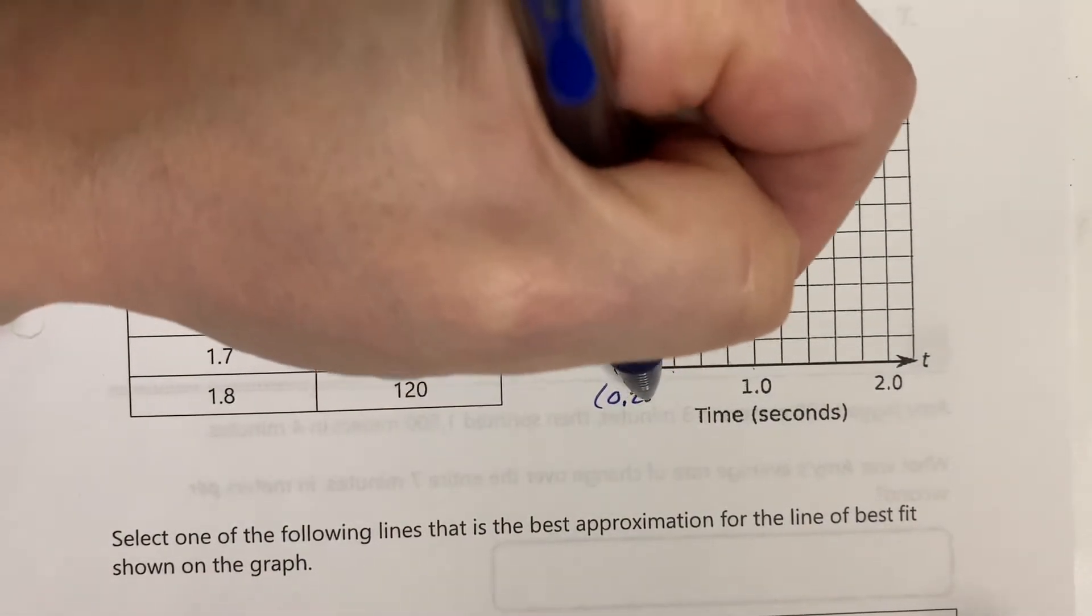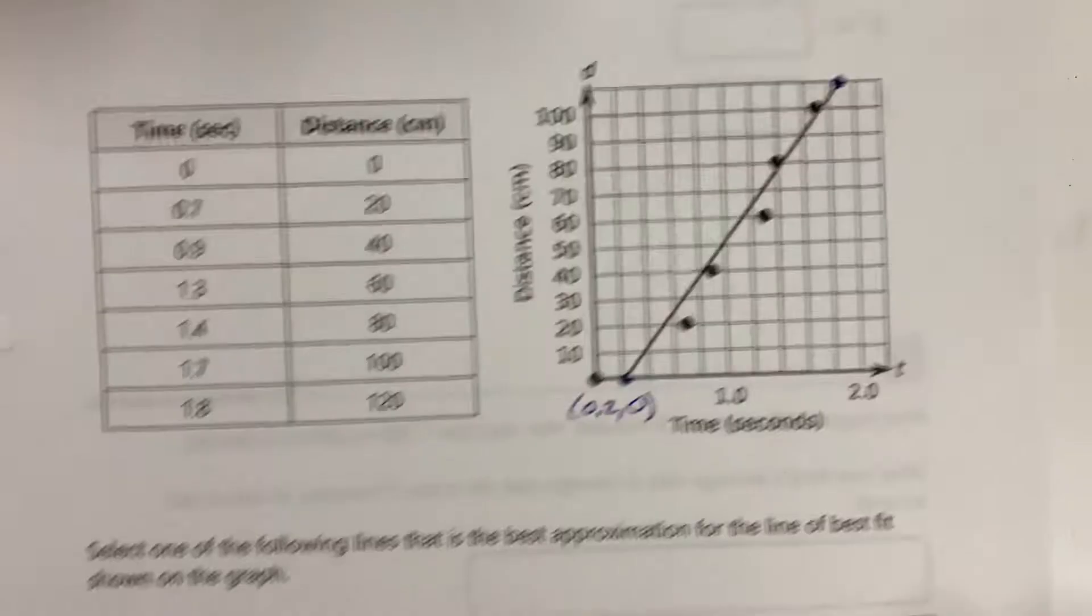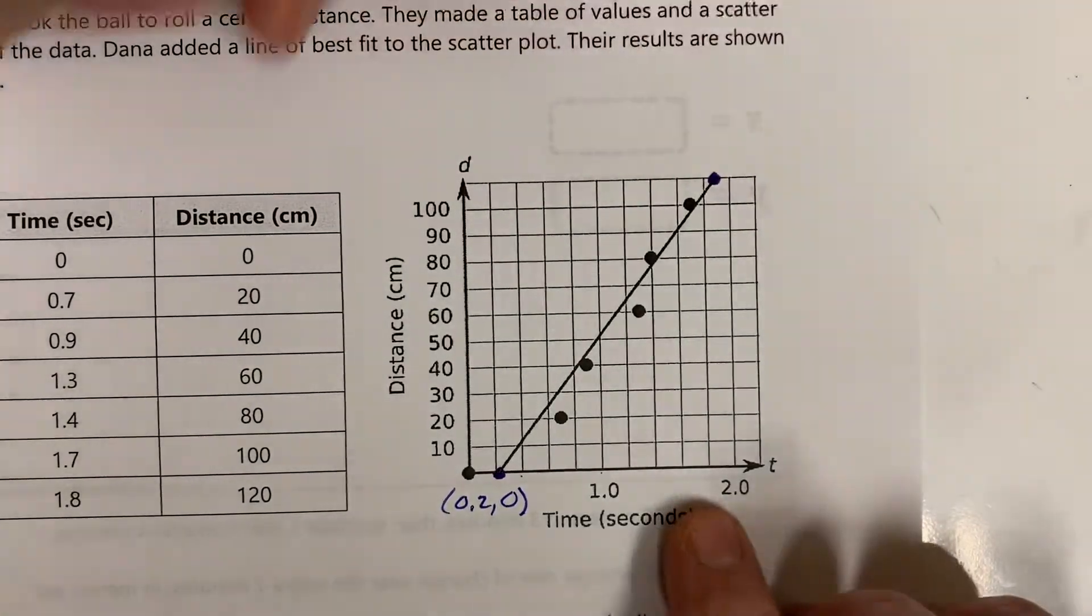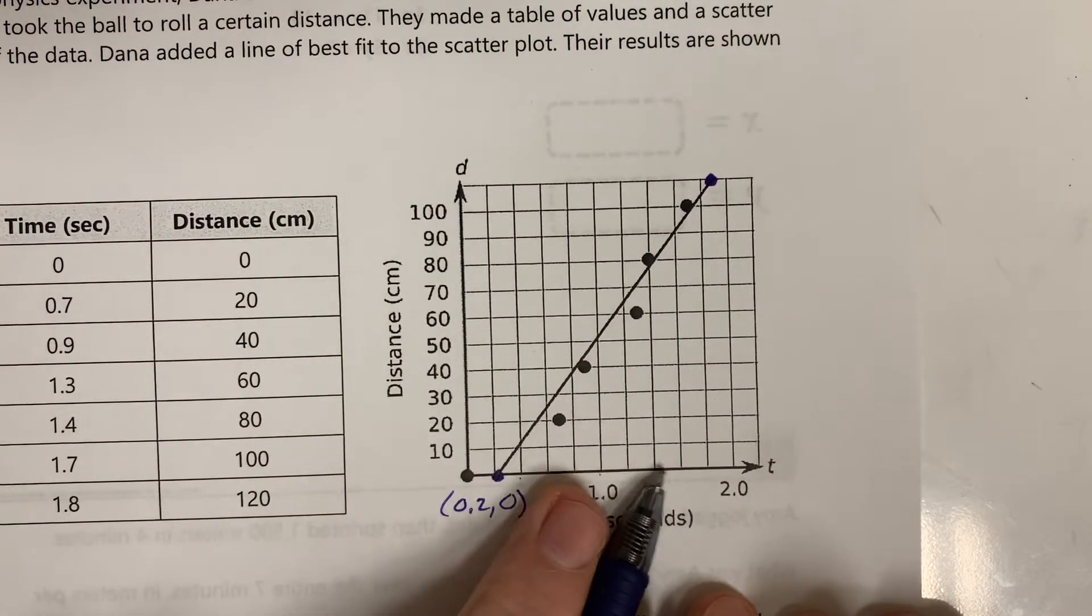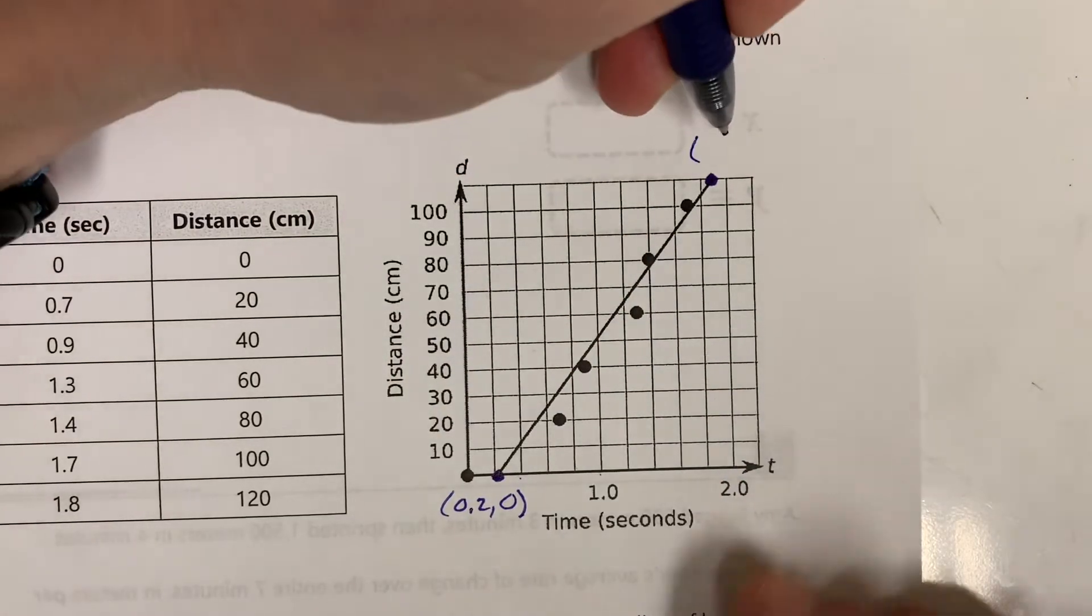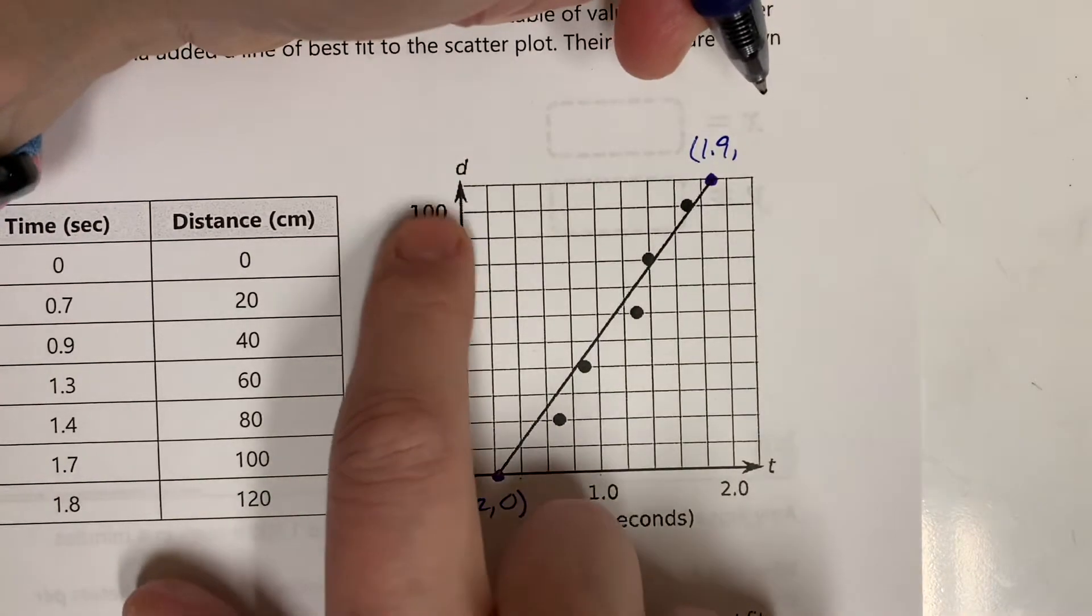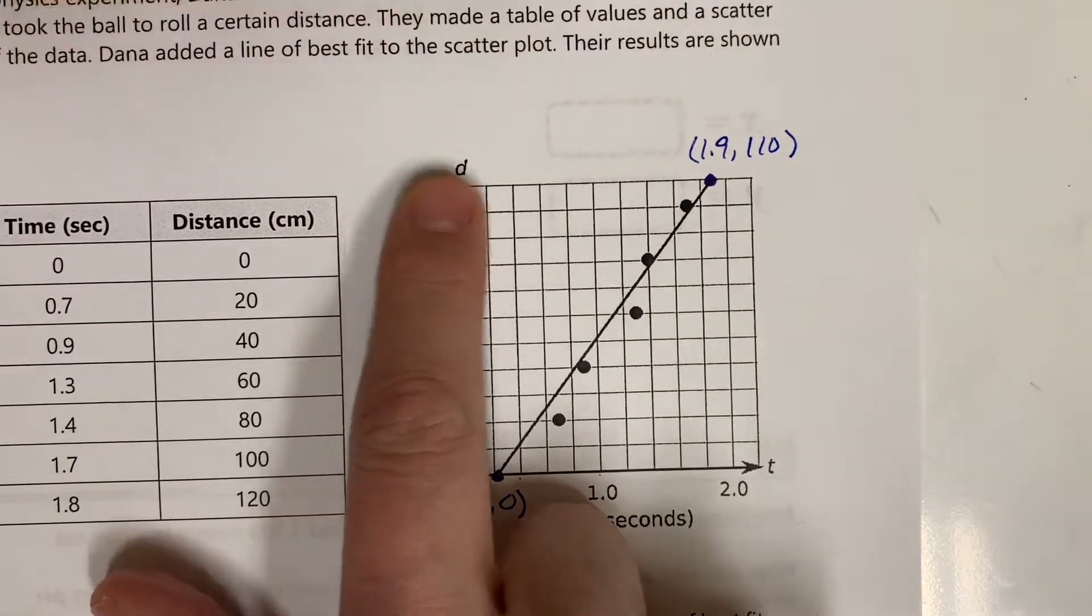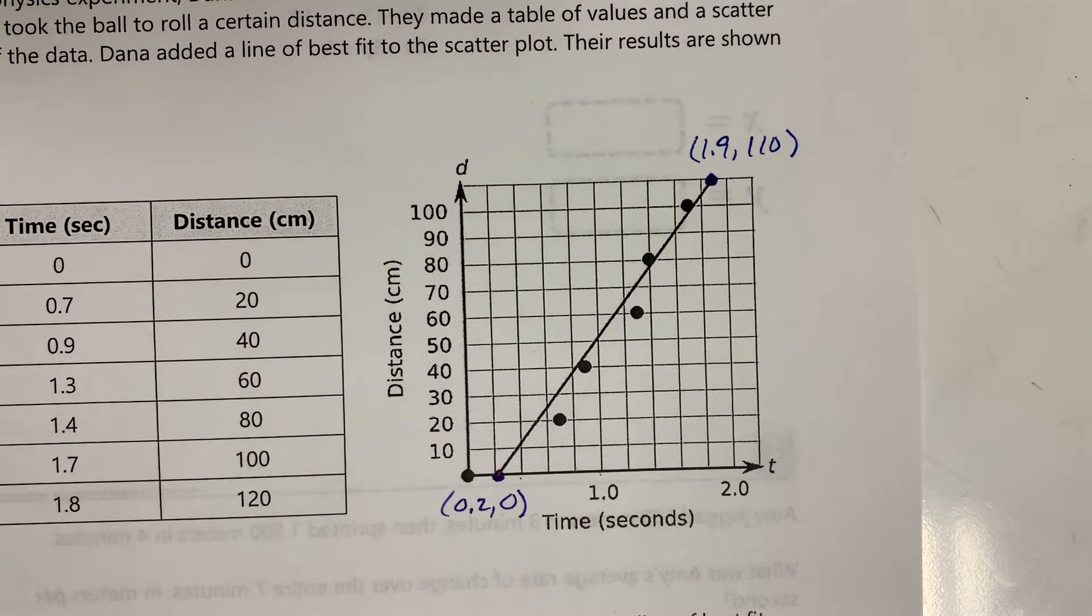This point up here is going to be about 1.9 for the t value, comma 110. Now what I would do is I would take those two points and I would create a line. So I have 0.2 comma 0 and I have my second point as 1.9 comma 110. So let's make the equation of that line.